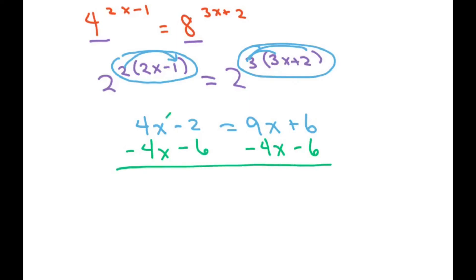So that zeroes out and you get negative 8. This will zero out and this will be 5x. So x equals negative 8 over 5.